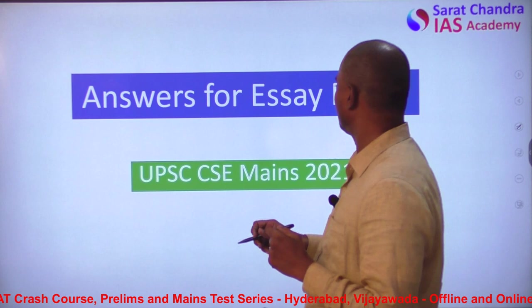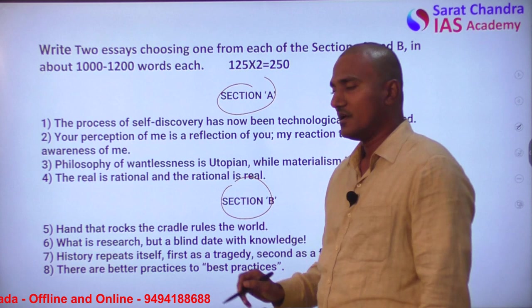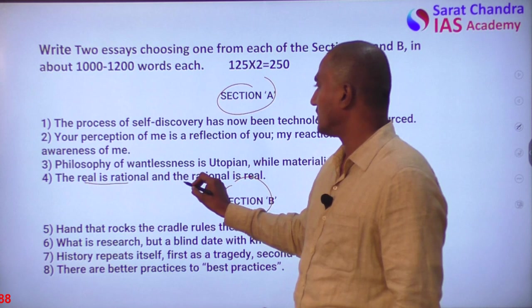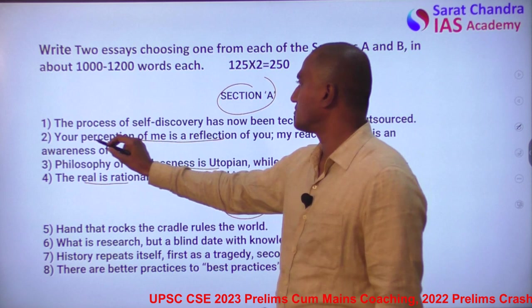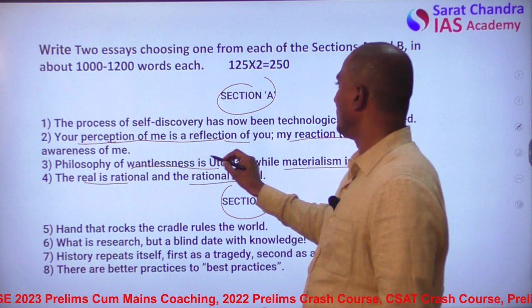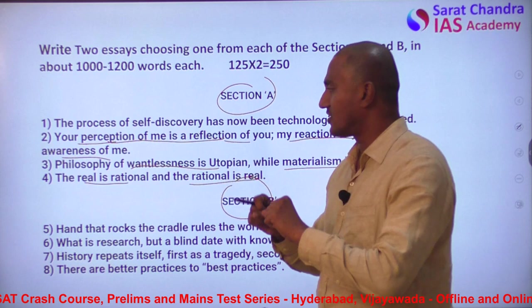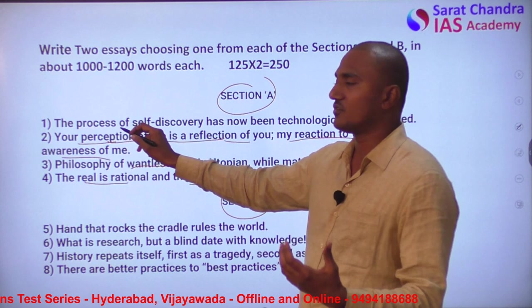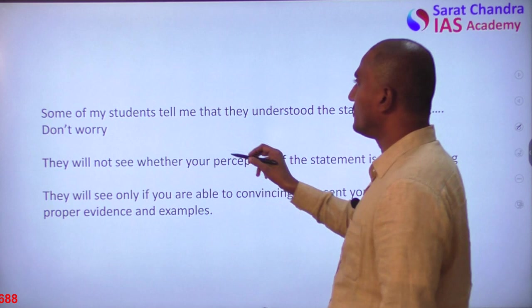Let us look at the questions. These are the two sections with 8 questions. In this video I will explain the first 4. If you observe these 4 questions, the fourth question is 'Real is rational and rational is real.' The third is 'Wantlessness is utopian, materialism is chimera.' The second has two statements: 'Your perception of me is a reflection of you' and 'My reaction to you is an awareness of me' — almost like comparative philosophical statements. Only the first is a single statement: 'The process of self-discovery has now been technologically outsourced.'